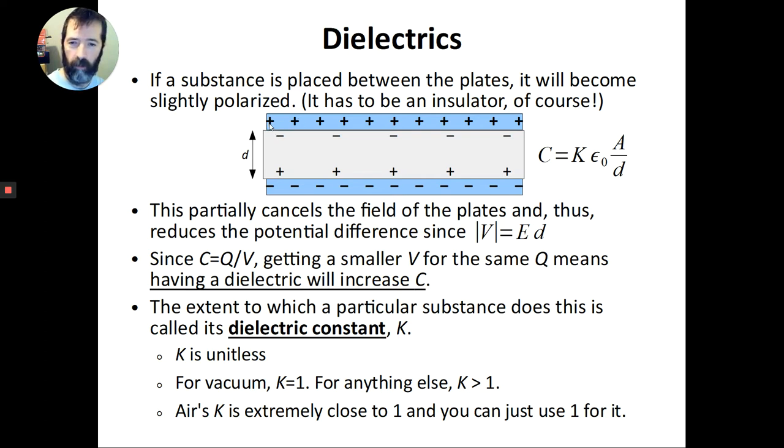So the electric field that I had there before is going to be partially canceled out. You can almost think of like these scattered minus signs here. It's almost like they effectively cancel out some of the pluses from the plate. And so the effective charge or the total electric field strength is going to be decreased. So what that means, if I reduce this electric field E, but I keep the same distance D, that means that the voltage, the potential difference between the plates, must get smaller.